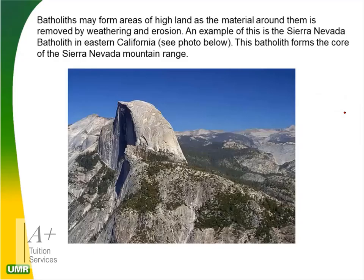Batholiths may form areas of high land as surrounding material is removed by weathering and erosion. An example is the Sierra Nevada Batholith in eastern California — once at the core of the mountain, it has been exposed at the surface. Batholiths form in the center of mountains and move up from the mantle into the heart of the mountain range. This is the Sierra Nevada mountain range.